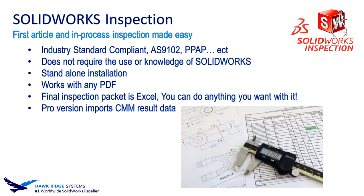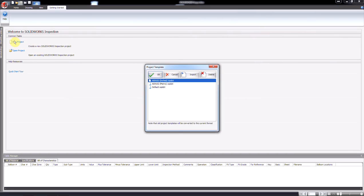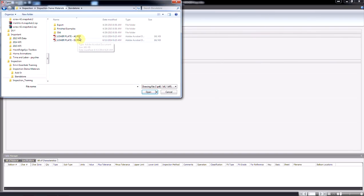One of the biggest key elements of Inspection is that the final output for the inspection packet is Excel, meaning anything you want to add, you can. There are two options available: the Pro version does everything the standard version does, with the addition of being able to import all of your CMM result data. Starting a new inspection packet is as easy as selecting the preloaded template for your industry and loading the PDF drawing you wish to QC against.